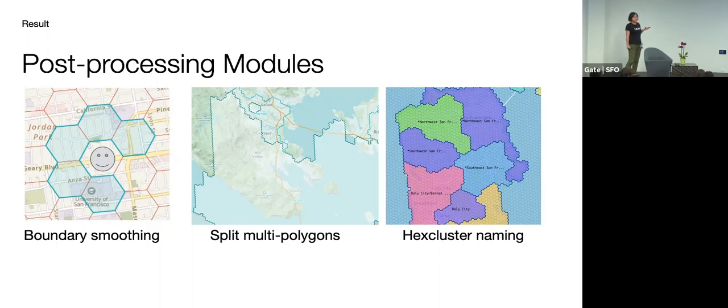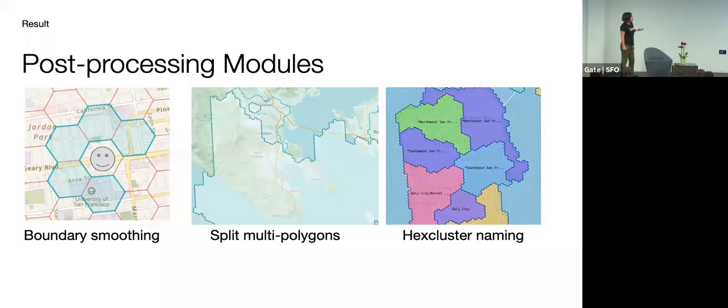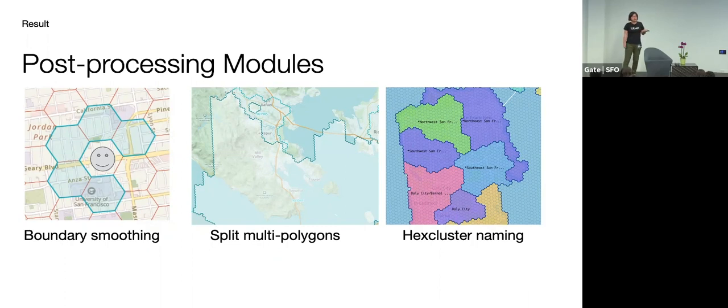But this little region didn't get reassigned because of this brute force algorithm. So we have another post processing step that we split these multiple polygons and then reassign the very small ones to their neighboring hex cluster to make sure things look nice and even. And there's also additional work on hex cluster naming, which is basically using the hexagon UUIDs and using the hexagon municipal characteristics to name those zones so that we can surface them to couriers.